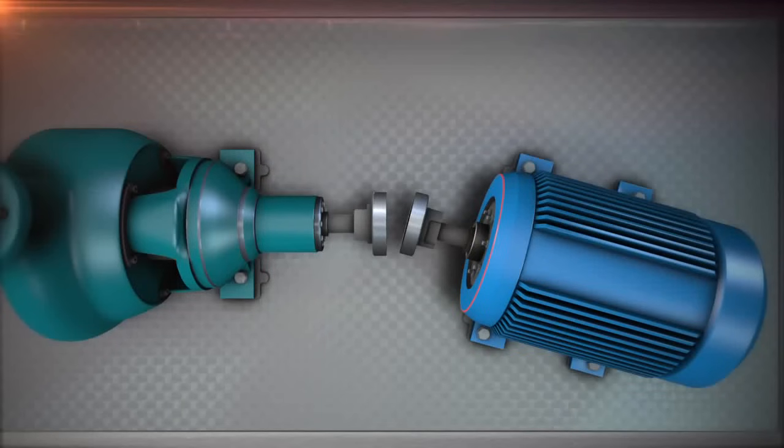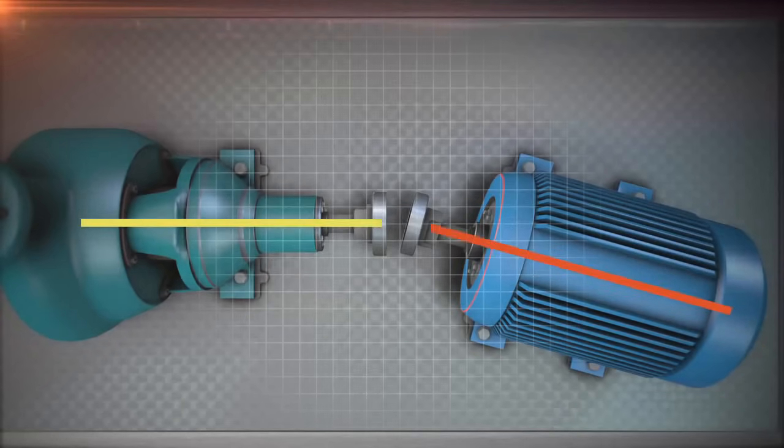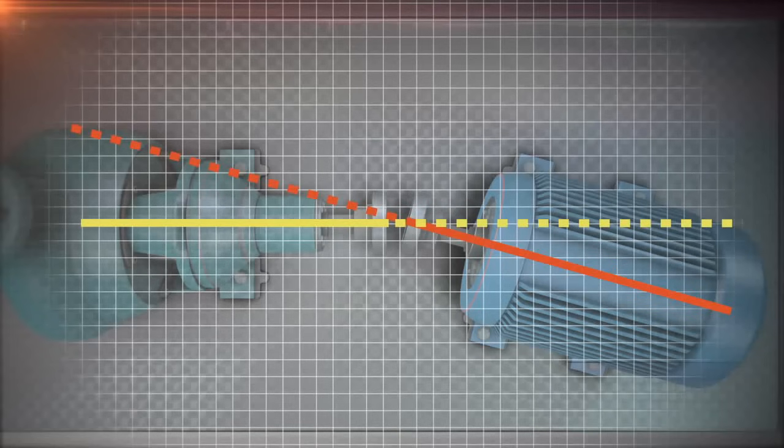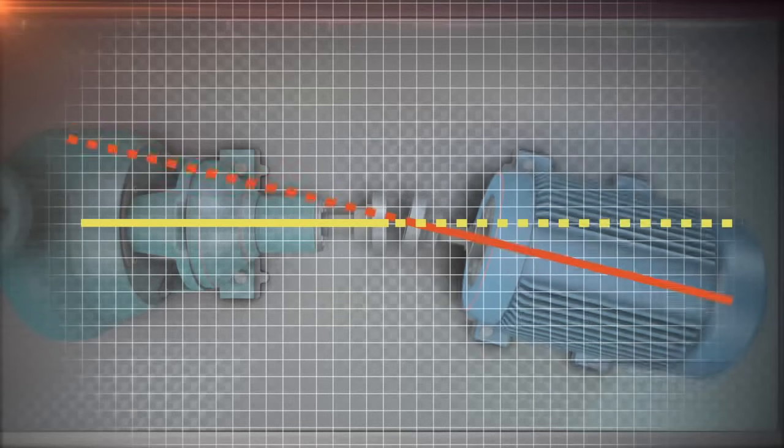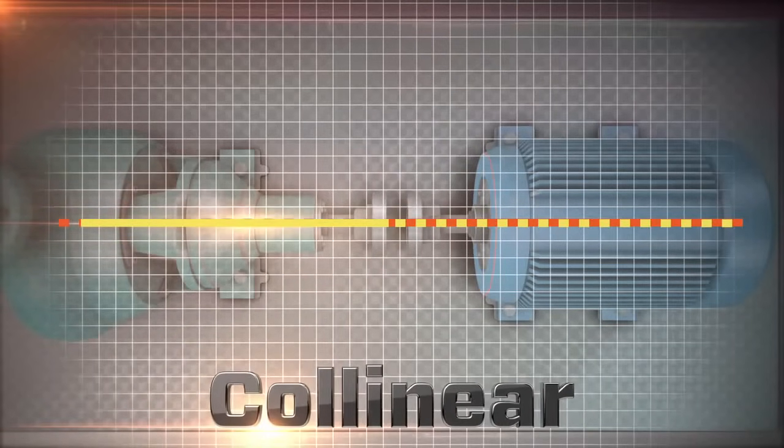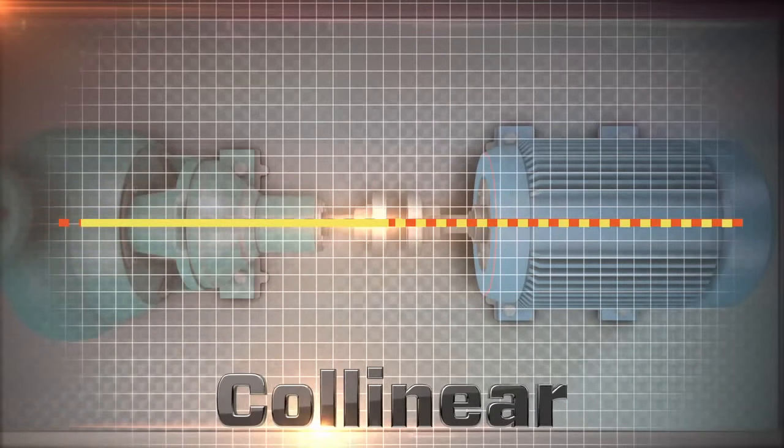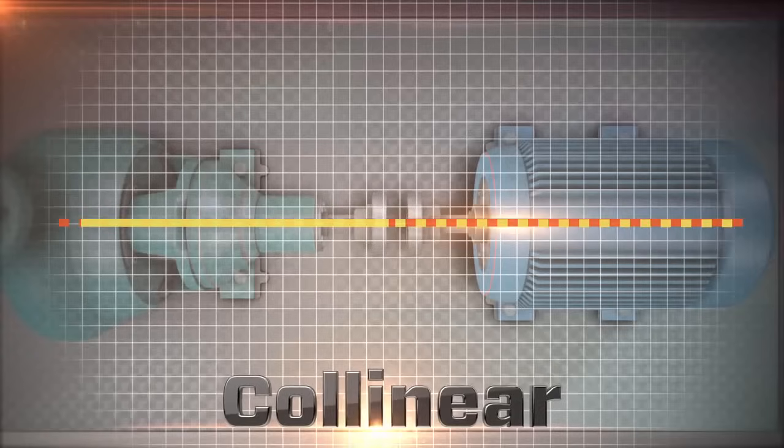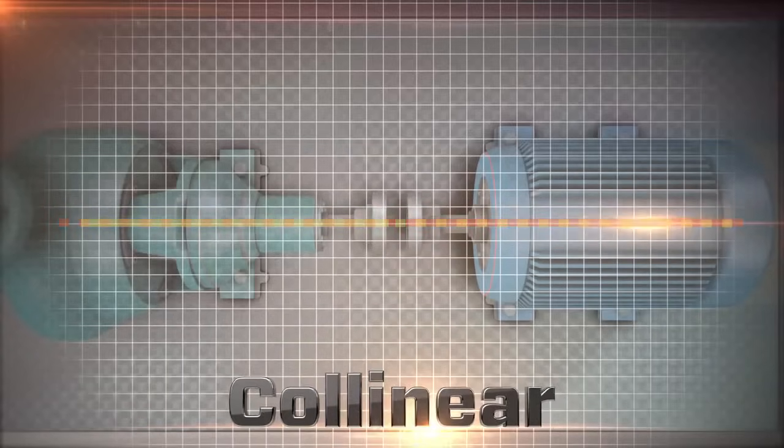Forget for a second that we are aligning two machine shafts. Instead, imagine two simple lines that represent the shafts. The goal of an alignment technician is to adjust these two lines to be collinear. Collinear means that two lines are positioned as if they were one single line.